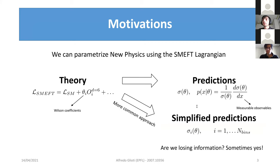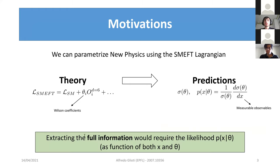Doing this binned prediction can lose some information. So what we should aim to do is to use the fully differential prediction p(x|θ), where this function should be known as well as possible as a function of all observable variables x and the new physics parameter θ.